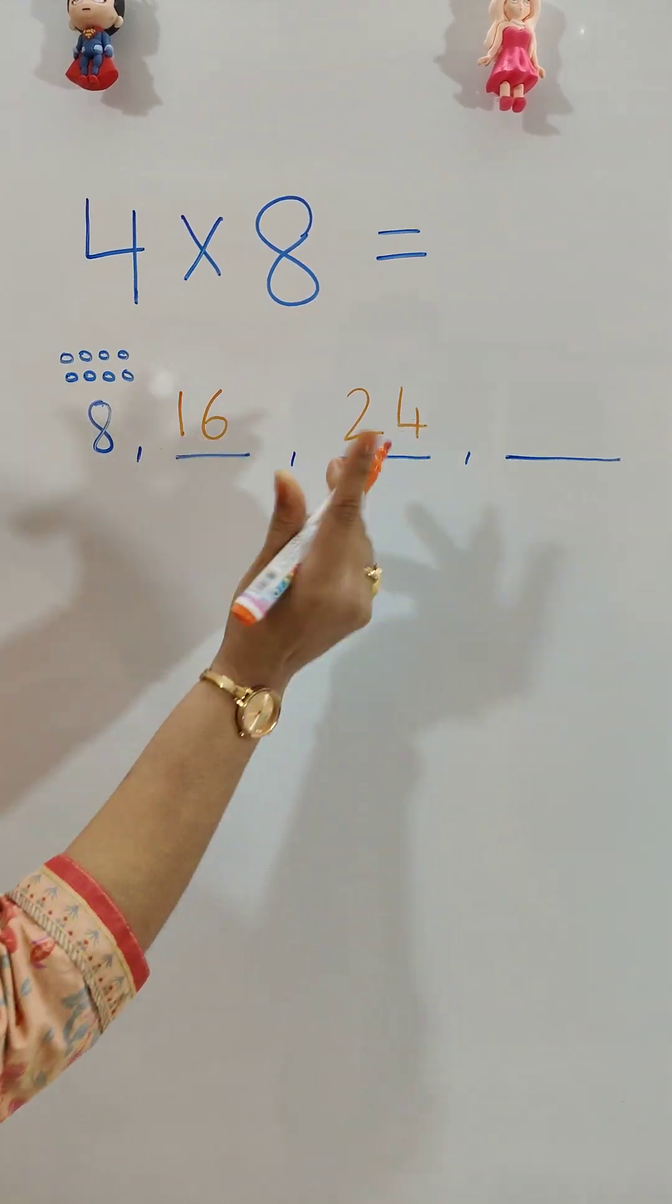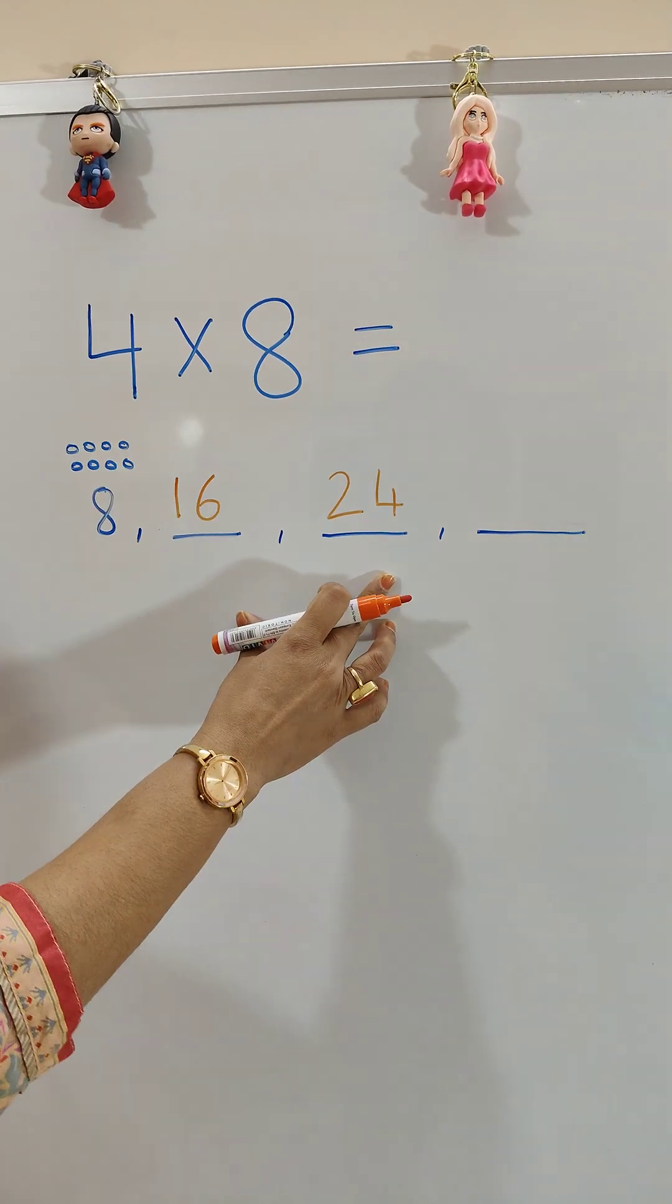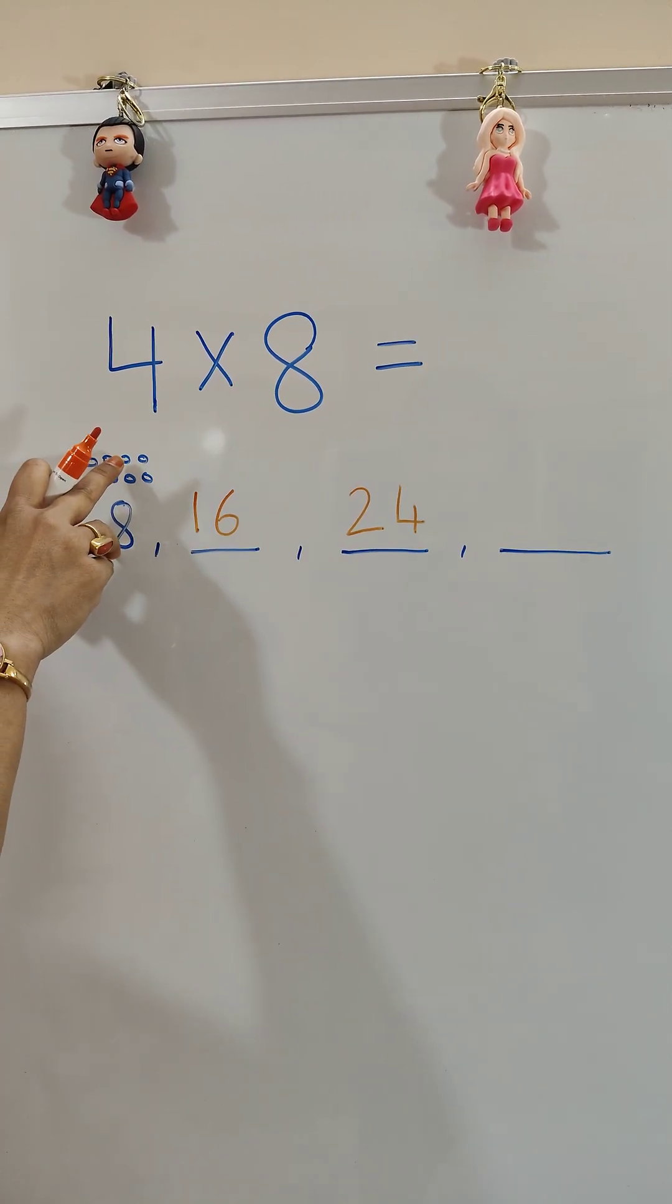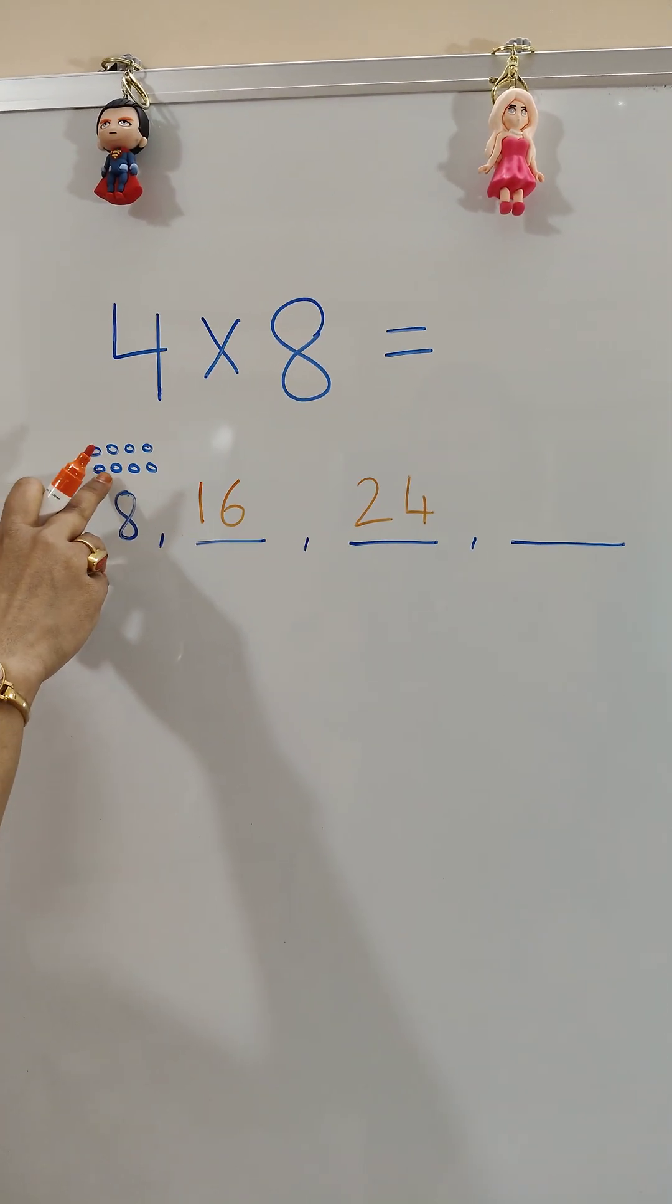After 24, we will count again 8 dots: 24, 25, 26, 27, 28, 29, 30, 31, 32. So 32.